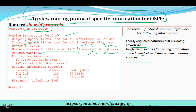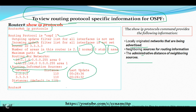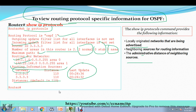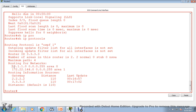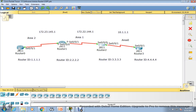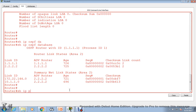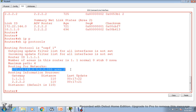Here you can see the maximum paths, and routing for networks: one network is 10.1.1.x and the second is 172.22.20.x. The routing information gateway shows 2.2.2.2 and 3.3.3.3, and the administrative distance is 110. If I run this command on a different router, it shows the same type of output. On a router connected to only one network, it will show only that single network. This is how we can retrieve multiple pieces of information to troubleshoot OSPF misconfiguration.